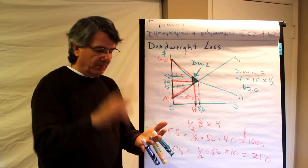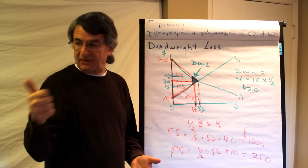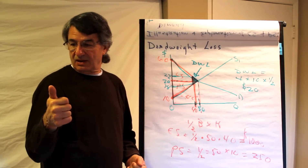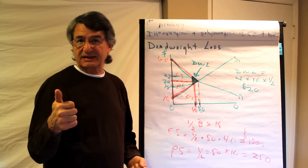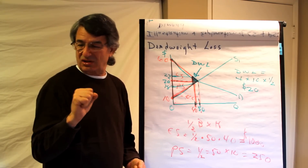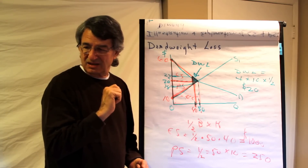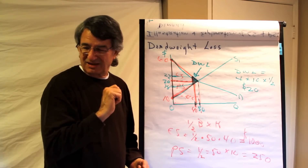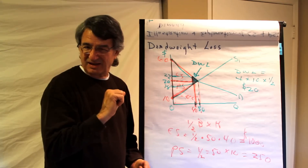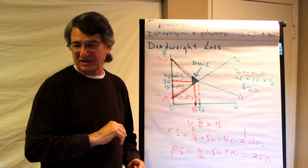That's producer surplus, consumer surplus — defined, explained, calculated — and deadweight loss. Tut tut and cheerio. My diploma is in chiropractic practices — what am I doing teaching? Well, that's good enough for you guys. Thank you.